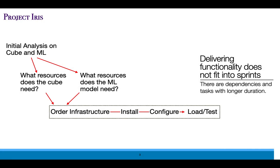One of the first difficulties we'll encounter is that all of our deliverables will not fit into a typical sprint. So we'll need to determine what the dependencies between tasks are, schedule those out, and we'll have to deal with components that will take longer to develop and deliver than a single sprint.